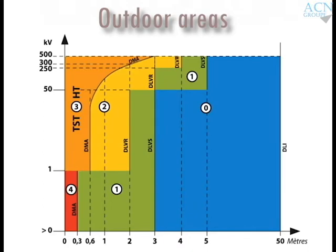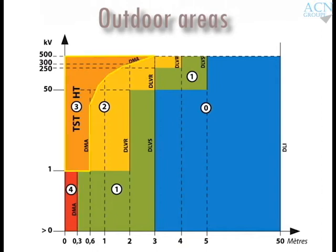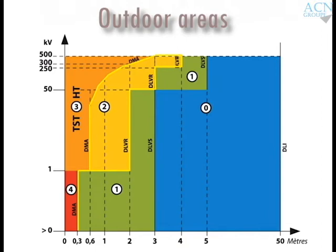Minimum Approach Distance (MAD): In low voltage, it sets the limit of Zone 1 and the whole of Zone 4, which means 0.3 meters from bare energized conductive components. In high voltage, Zone 3 up to the limit with Zone 2, it is fixed at 0.6 meters from the bare energized conductive components.